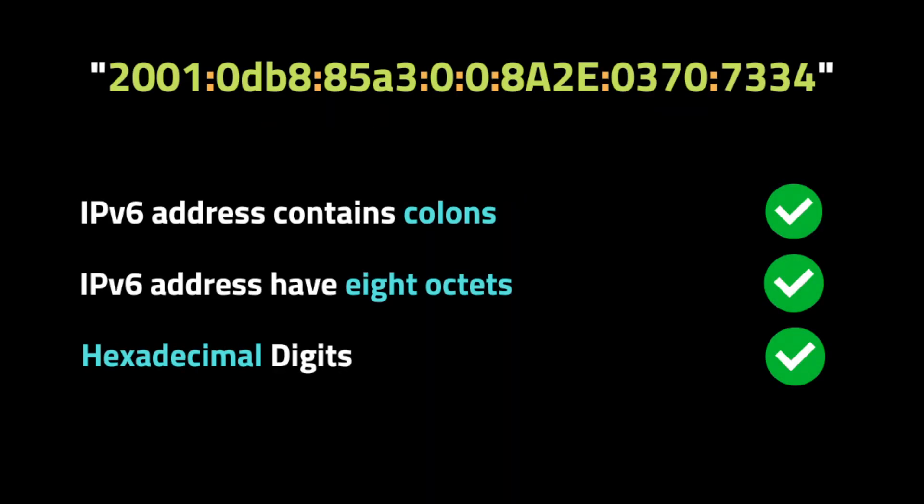For the next input example, we apply the same IPv4 check first. Since the address does not contain a period, it's not a valid IPv4, so we check for IPv6. The first condition is that the input must contain a colon. If true, we split the string into a list by the colon and check if we have eight sections — if not, we return 'Neither'. We then check if each section has exactly four hexadecimal digits. If any condition fails we return 'Neither'; if all pass we return IPv6.